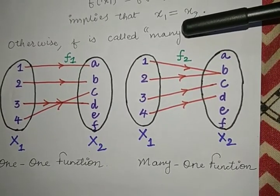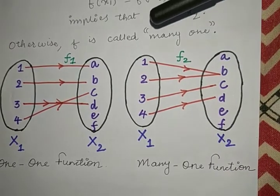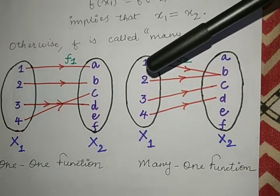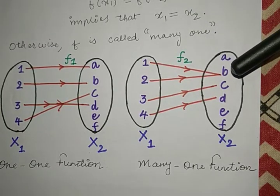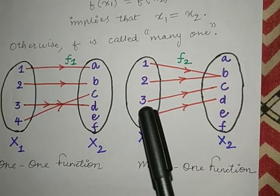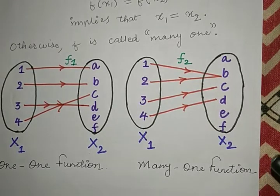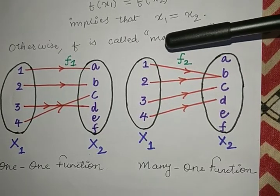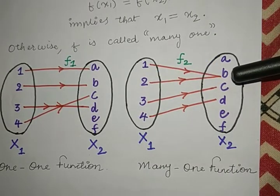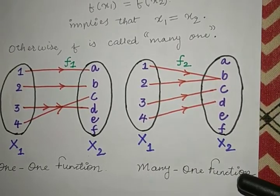Similarly, if you look at function f2, this function takes 1 and 2 to a single element that is b, and f2 takes the element 3 to c and the element 4 to d. Here you can see that the function f2 takes two different elements to one single element, and that is why this function is called a many-one function.